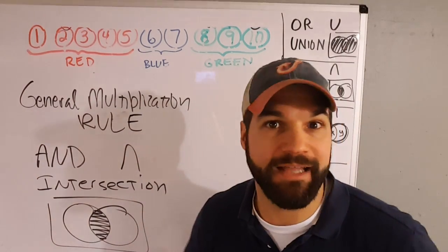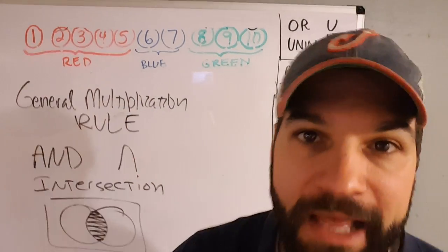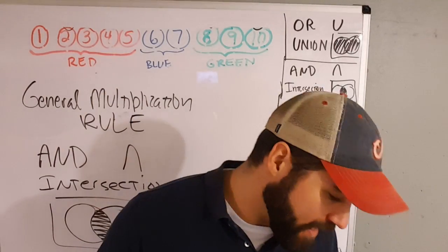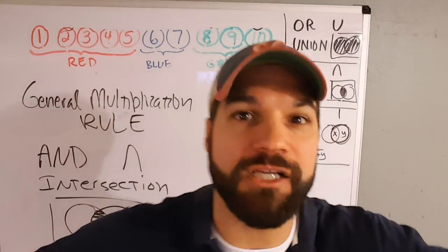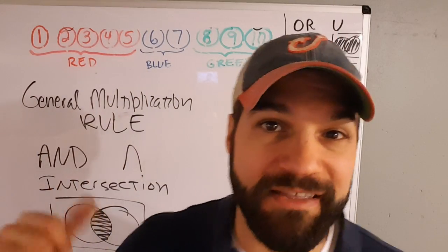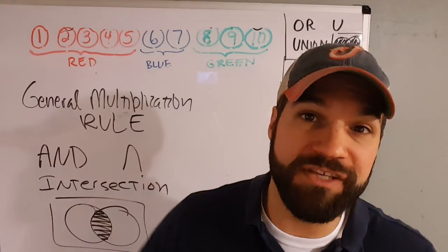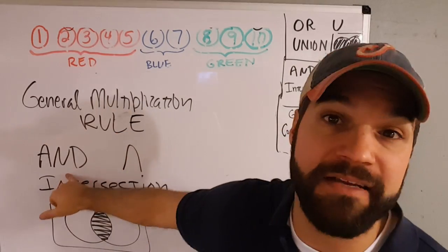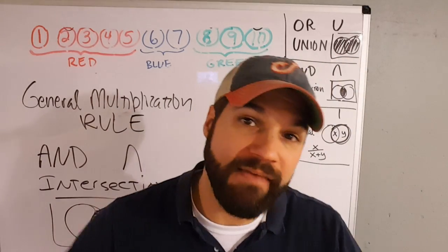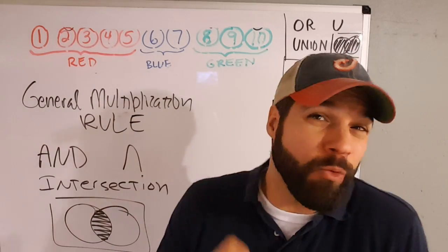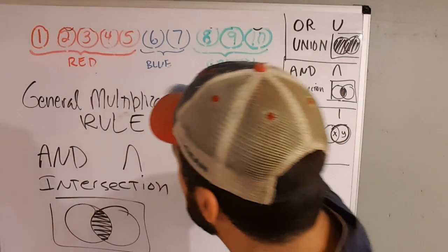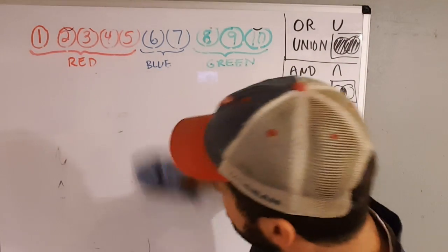What's up guys, IP Stats Guy here trying to help you get your 5. I want you guys to get 5, but probability is one of those roadblocks we all freak out about when we start learning a little bit about it. We're going to talk about the general multiplication rule — this is about 'and,' the intersection where they overlap. When talking about 'and,' you multiply, but it's a wee bit tricky.